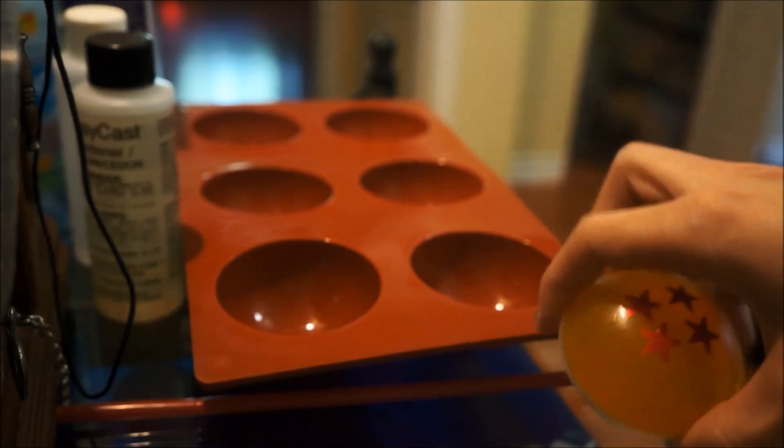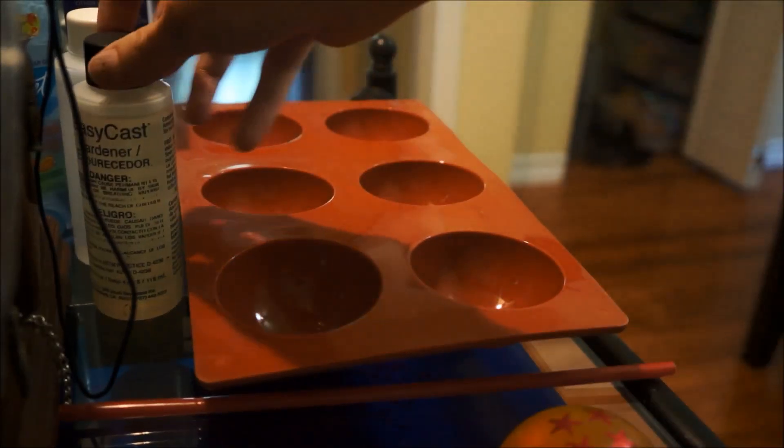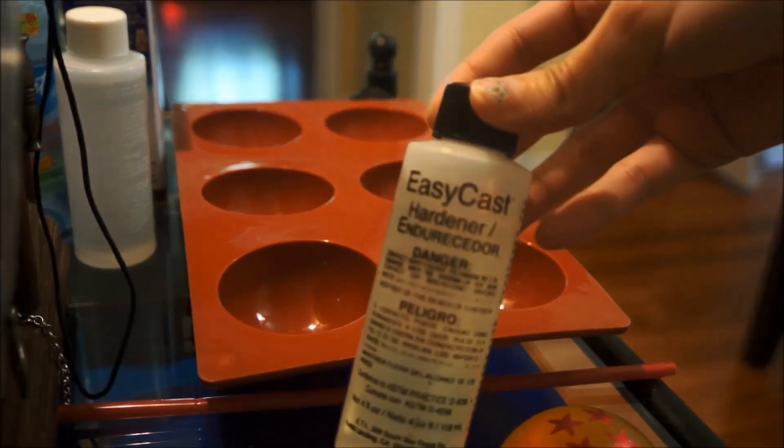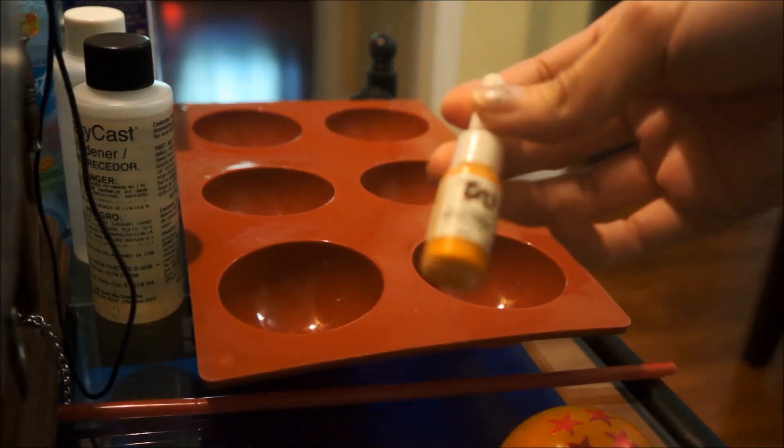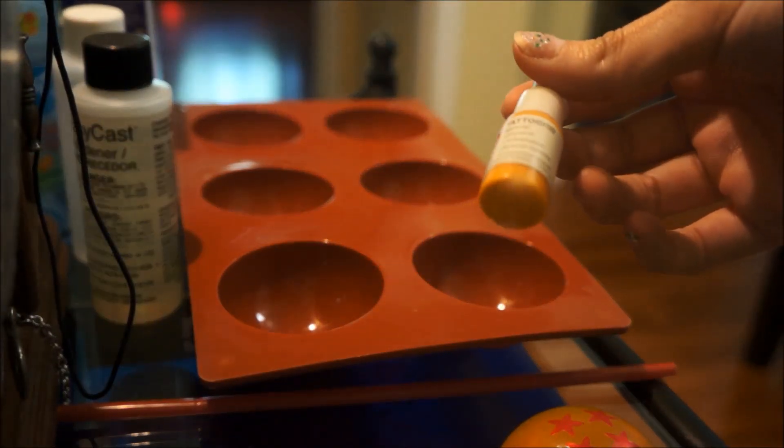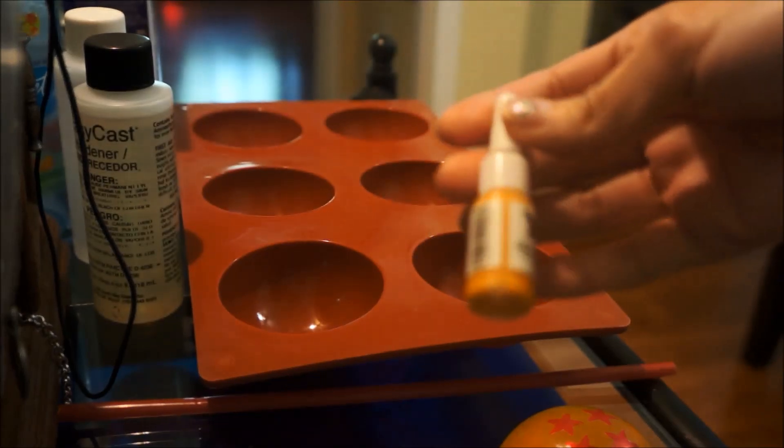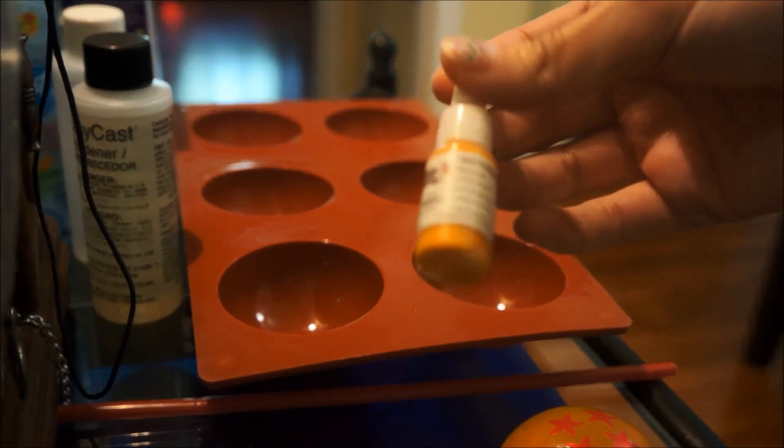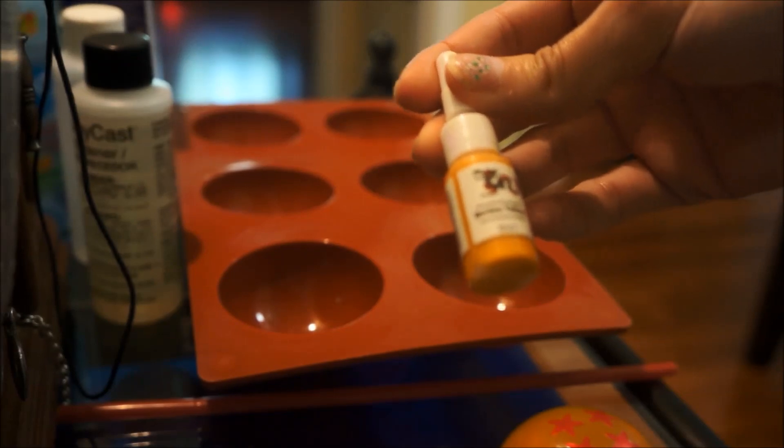So for this tutorial you're going to need resin. I'm using the EasyCast clear resin. You're going to need something to color the resin with that's kind of opaque that you can see through. I'm using this tattoo ink in the color golden yellow.